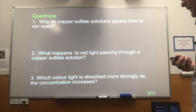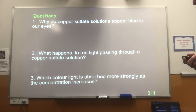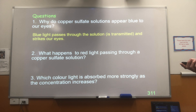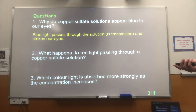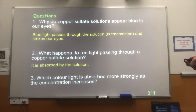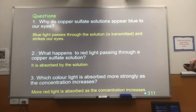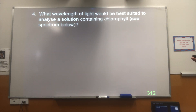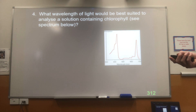Have a go at answering those questions. Copper sulphate appears blue because blue light is transmitted. That means the other wavelengths are absorbed — the red light is what's absorbed by the copper sulphate. So it's the red light which gives us the ability to work out the concentration of the copper sulphate, and it's red light that we would use to measure it.